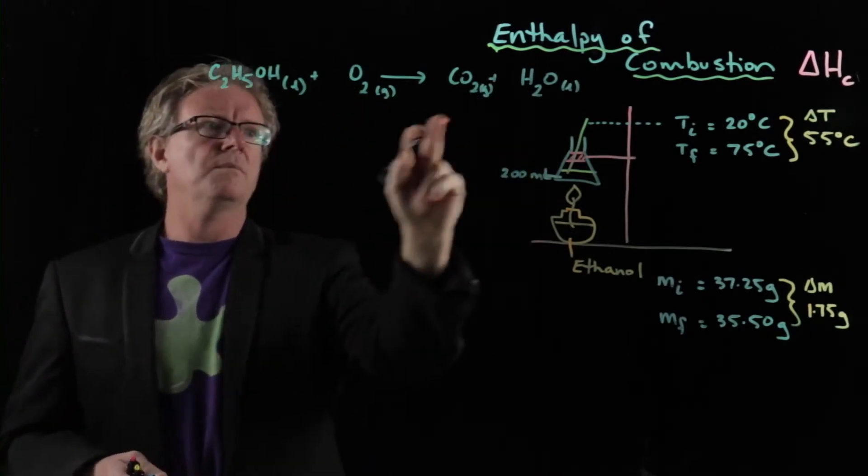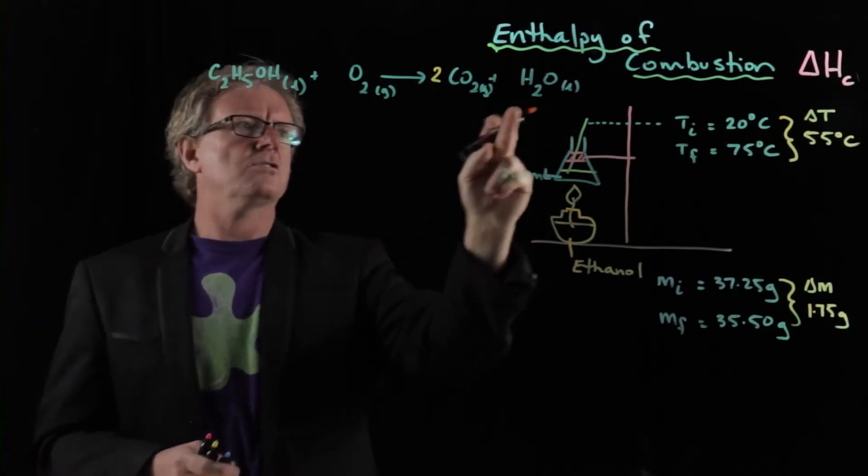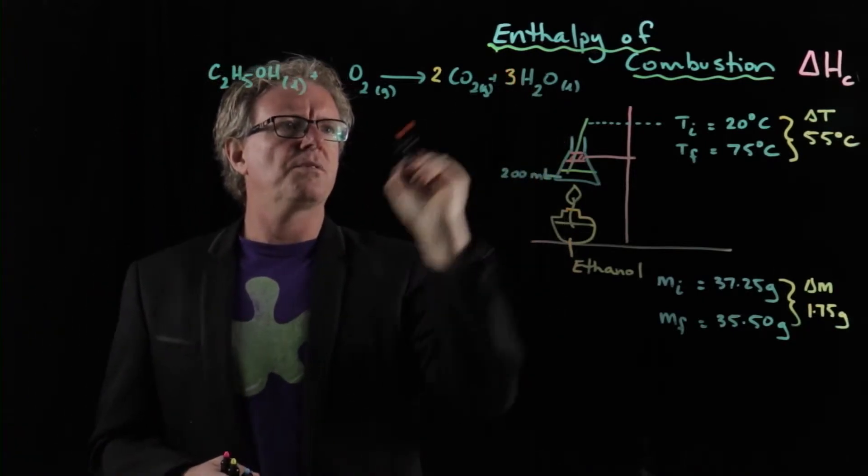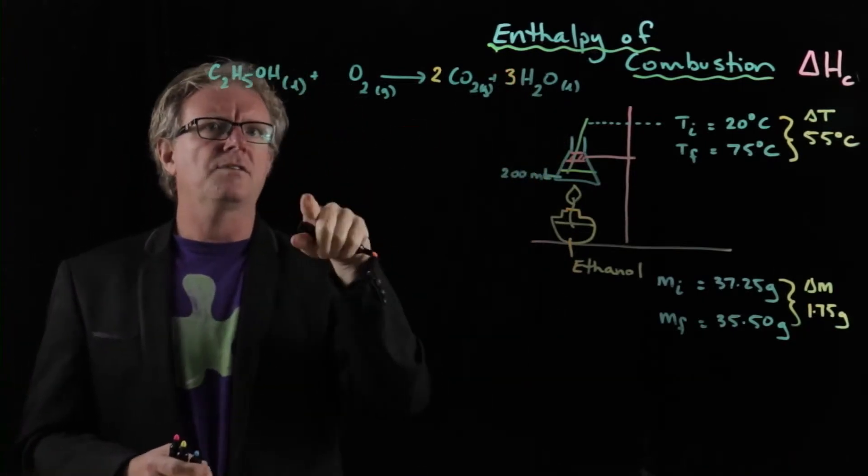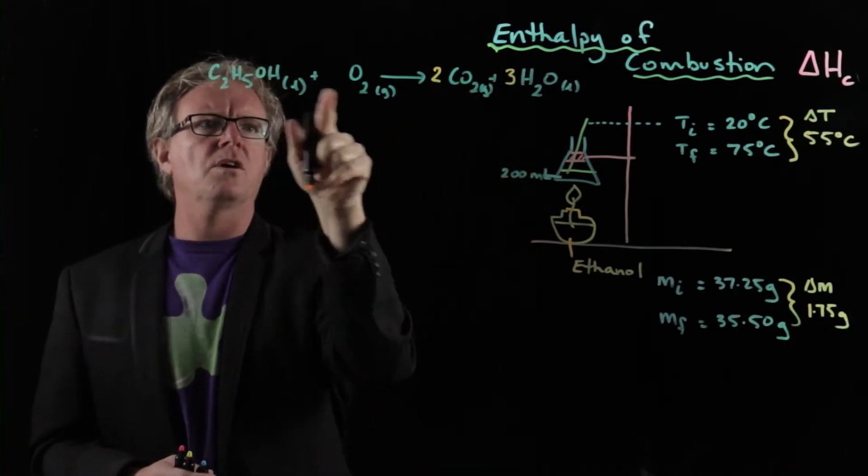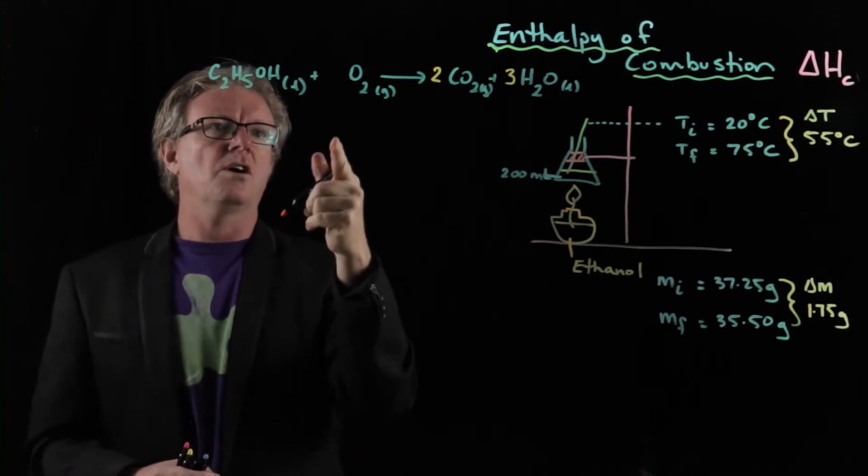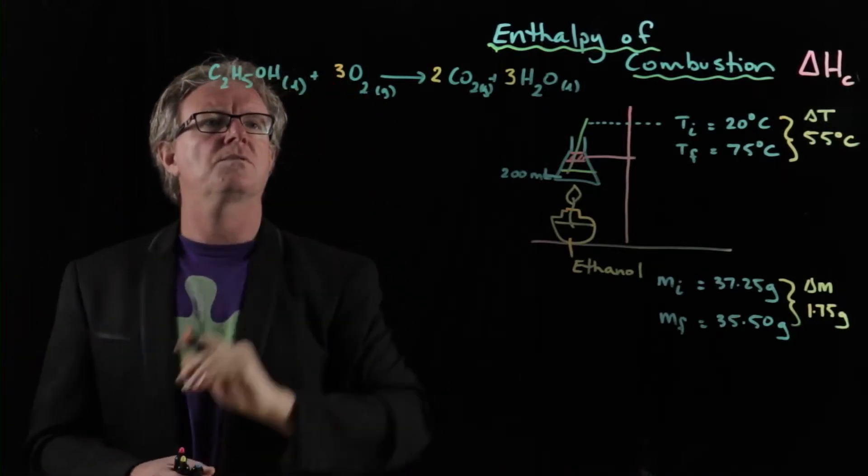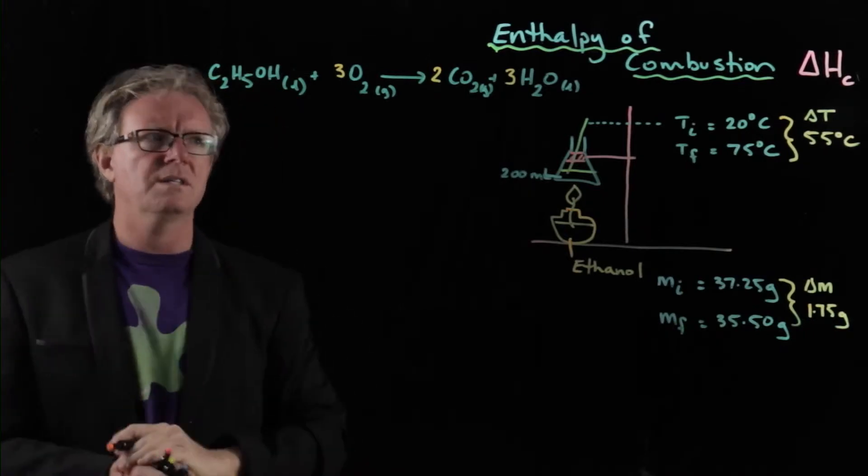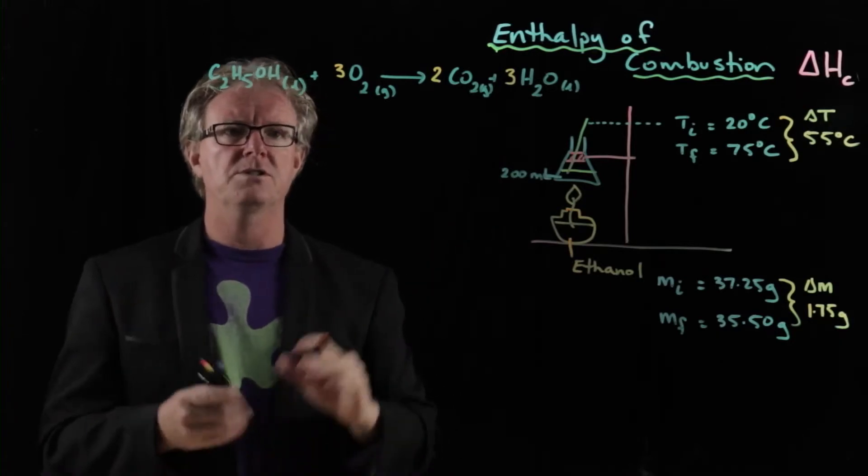Now we're going to balance it. So two carbons, one carbon, so let's put two there. Then we've got five, six oxygens. We've only got two over here, so let's put a three. And then we now count the oxygens left. So we've got two, two's are four, five, six, seven. And we've got two and one is three. So we need to have seven over here. So if we go two times three, which is six, plus one is seven. So there is our balanced equation.